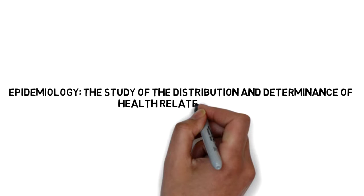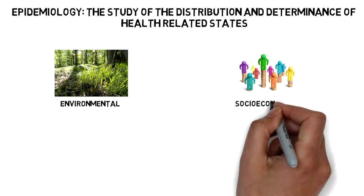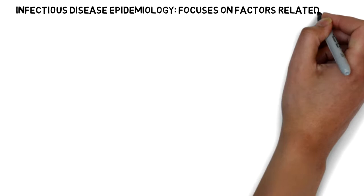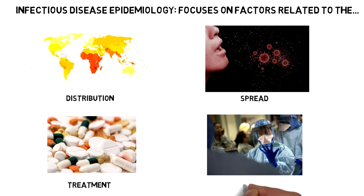Epidemiology is the study of the distribution and determinants of health-related states. An epidemiologist may study the influence of environmental, socioeconomic, demographic, and health factors on the dynamics of a disease in a population. Infectious disease epidemiology is the branch that focuses on the study of factors related to the distribution, spread, treatment, and control of an infectious disease in a population.